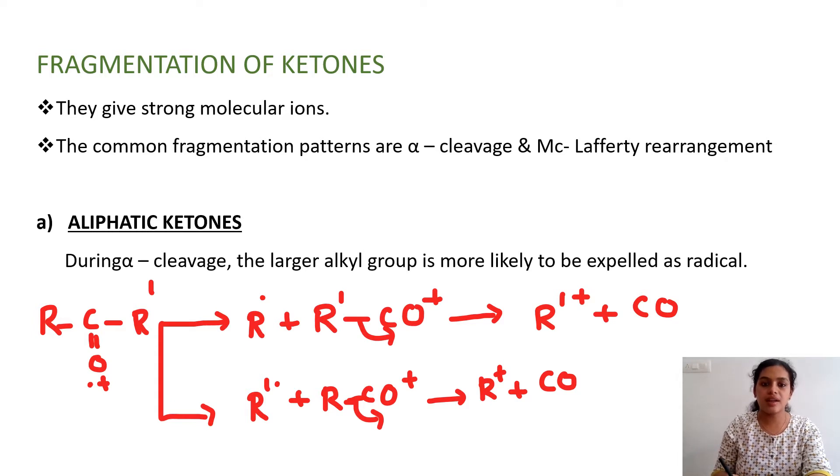During alpha cleavage, the larger alkyl group is more likely to be expelled as a radical. So here, the fragmentation could be at two places. It could be here to give R' dot and R'CO+ will be obtained, and from there R'+ can be obtained.